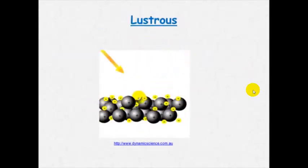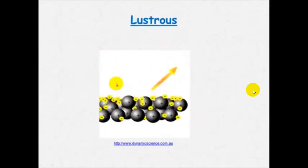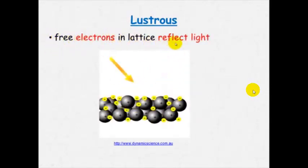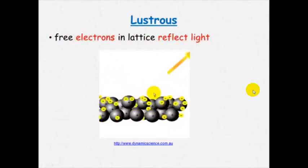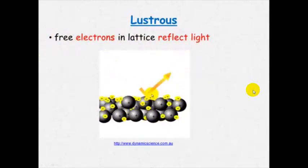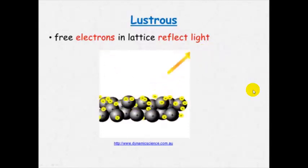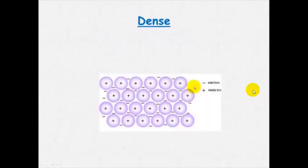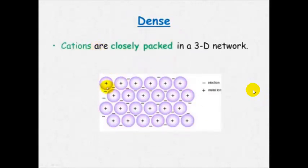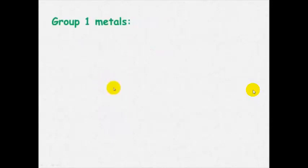And they are lustrous and the reason that they are lustrous is that the free electrons in the lattice can reflect light. And you can see here the light bounces off, hits the free electrons and is reflected and that is what causes reflection. They are also dense and we have already pretty much discussed this, it is because of the electrostatic attraction between the cations and the delocalized electrons.